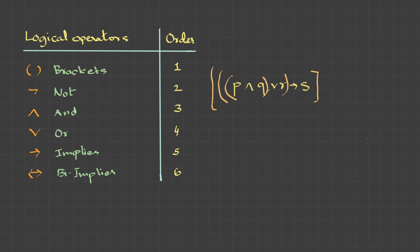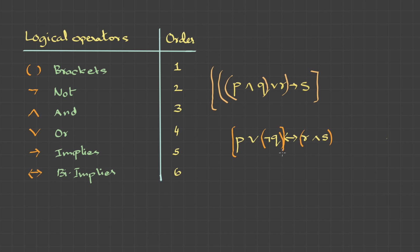Let me take one more example. For this statement, the first priority is given to negation (NOT), then followed by AND, then followed by OR, and finally the remaining one: biconditional.